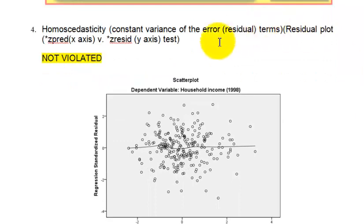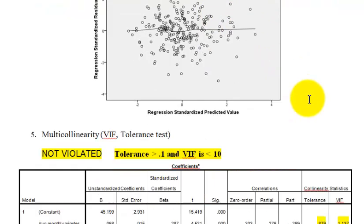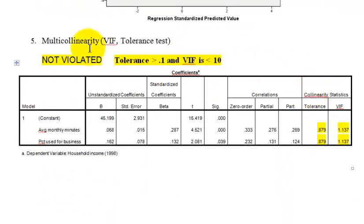For homoscedasticity, we did the scatter plot and added the lowess line, and it's pretty much straight. So we did not violate that assumption. And lastly, multicollinearity was not violated — you look at the tolerance scores and the VIF scores. All five assumptions are met, so let's move on.